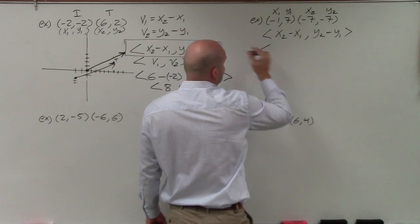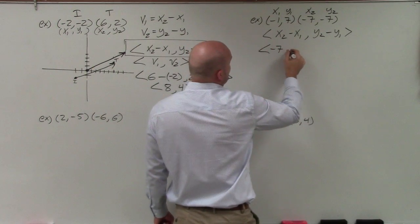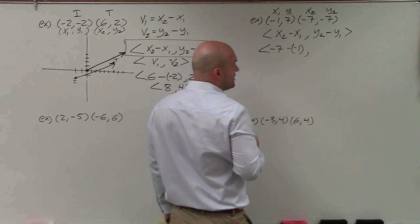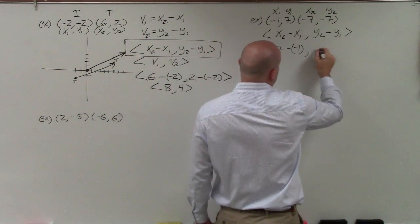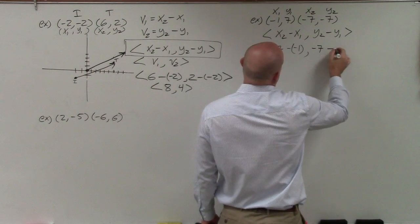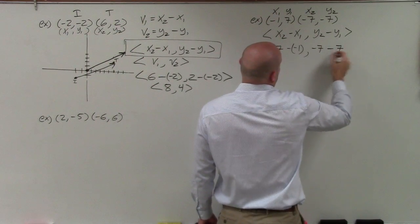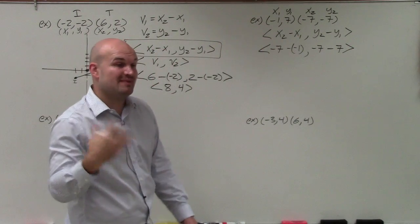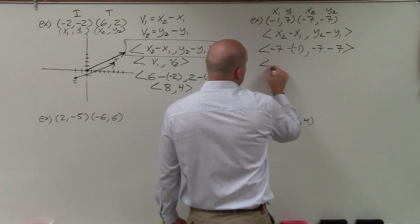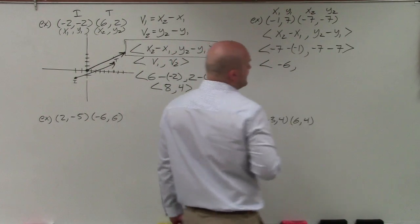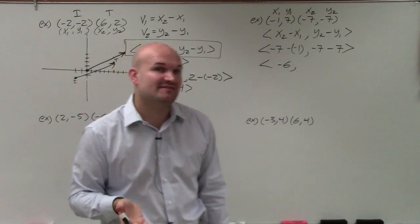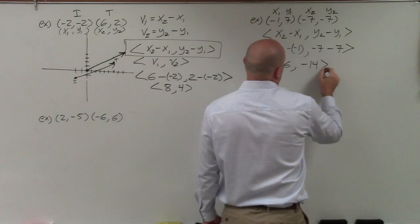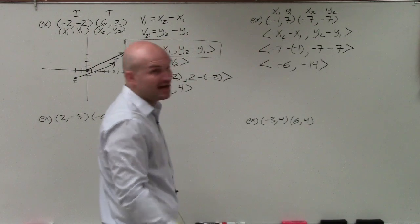OK, so what I have here is negative 7 minus negative 1. Whenever I'm subtracting the negative, I always like to put it in parentheses so I don't make the mistake. Then I have negative 7 minus 7. OK, so negative 7 minus a negative, so minus a negative is plus. So negative 7 plus 1 is going to give me negative 6. Negative 7 minus 7, so if you owe $7 and you borrow 7 more, now you're going to owe 14. OK, and that is simply my component form. Done.